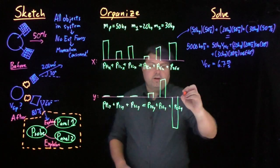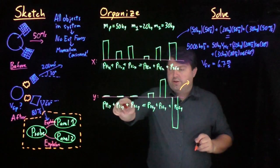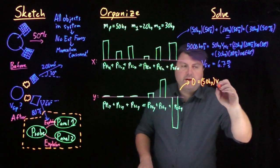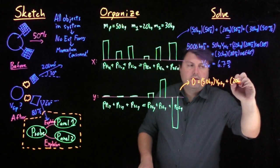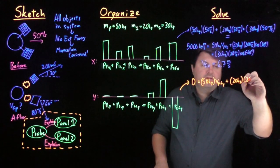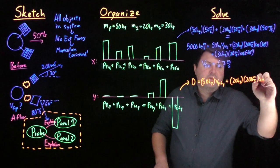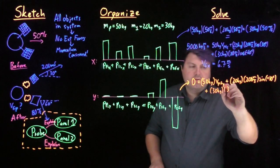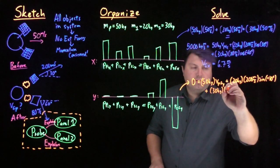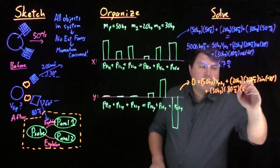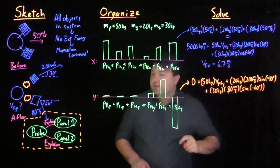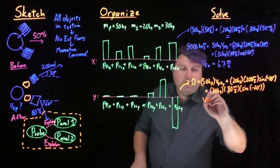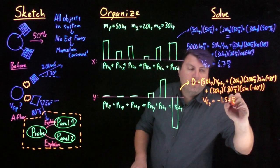We can do the same for the y direction, which is a little bit easier. Here 0 plus 0 plus 0 is just equal to 0, and that's equal to 50 kilograms times our final velocity of our probe in y, plus 20 kilograms times 200 meters per second times sine of positive 30 degrees, plus 30 kilograms times 80 meters per second times sine of negative 60 degrees. Solving for all of this, we get that VFy equals negative 1.57 meters per second.